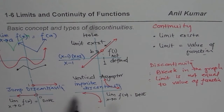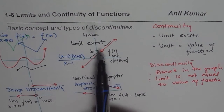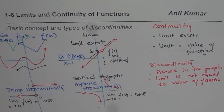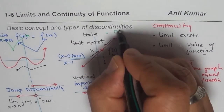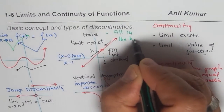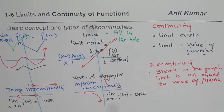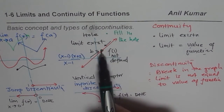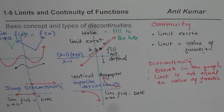In jump discontinuity and infinite discontinuity, the limit does not exist. However, in hole discontinuity the limit exists, and in that special case we can actually fill in the hole by defining another function — making it continuous. So that possibility is there with hole discontinuity. Based on these aspects, I have a couple of videos with links provided. I hope the concept is clear. Thank you and all the best.